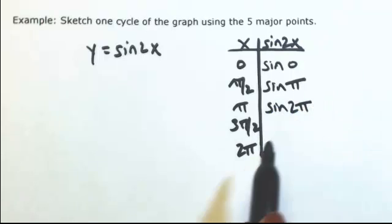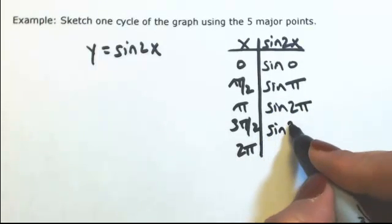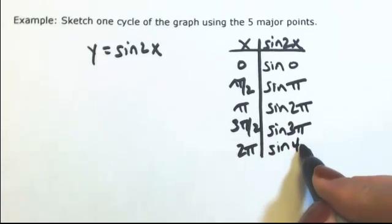Sine of 2pi. Again, the 2's are going to cancel, so sine of 3pi, and then sine of 4pi.